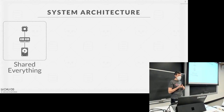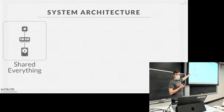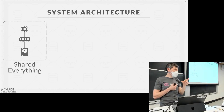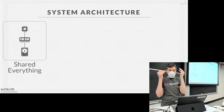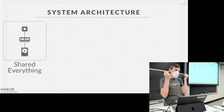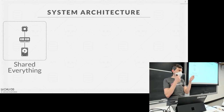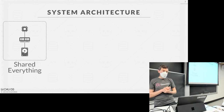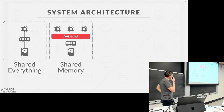Everything we've talked about so far in this course are what are known as shared everything systems, meaning the disk, memory, and CPU are all local to each other. If I want two threads or two queries running at the same time, they can pass messages over memory. If one transaction writes something to the local disk, the other transaction can just read that.